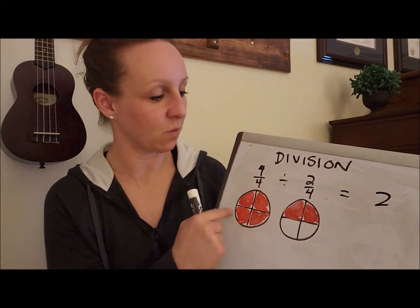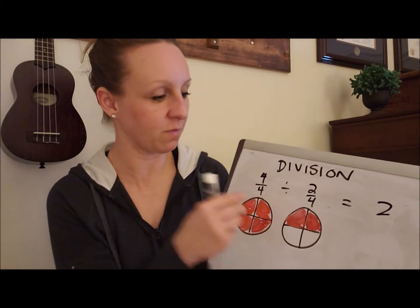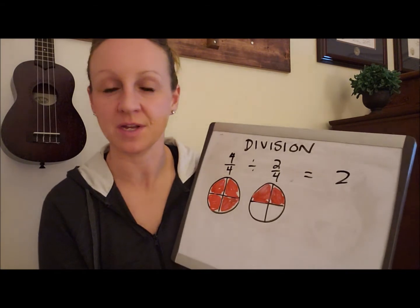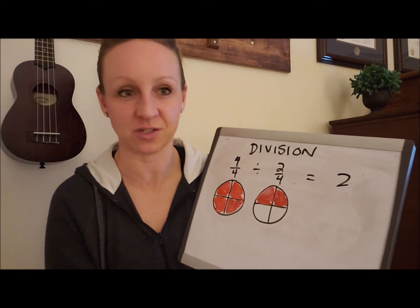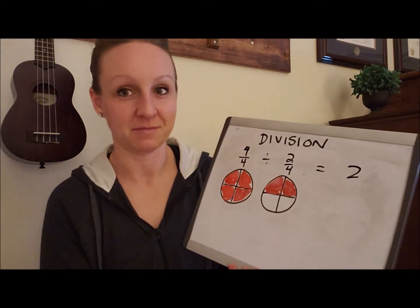So if I'm saying what is 4 out of 4 divided by 2 out of 4, so I'm taking 4 out of 4 and dividing it by 2, the answer is just 2. The answer isn't even a fraction, it's just 2. Done.